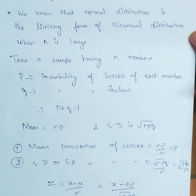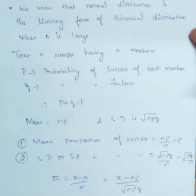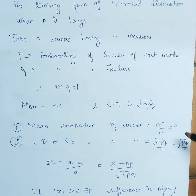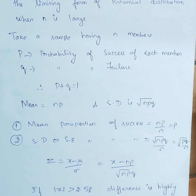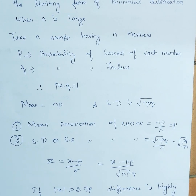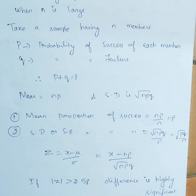The standard deviation is root npq. The mean proportion of success is np/n, which is simply p. Similarly, the standard error of proportion of success is root(npq)/n, and n cancels out. The formula z equals x minus mu divided by sigma gives us z equals x minus np divided by root npq.